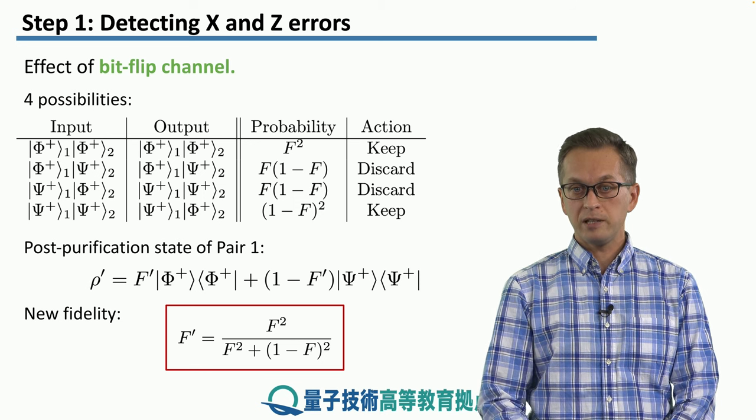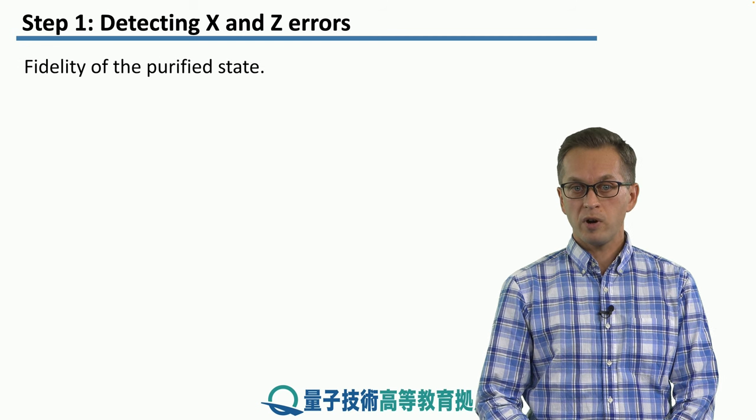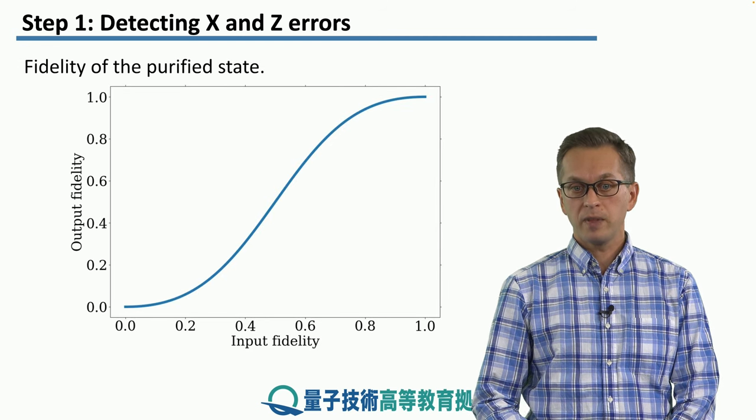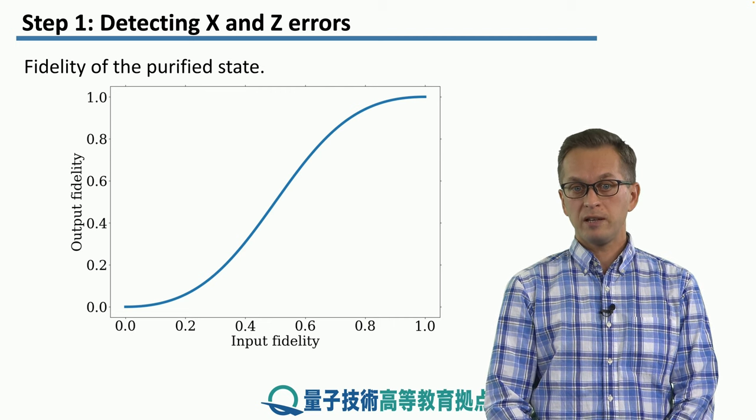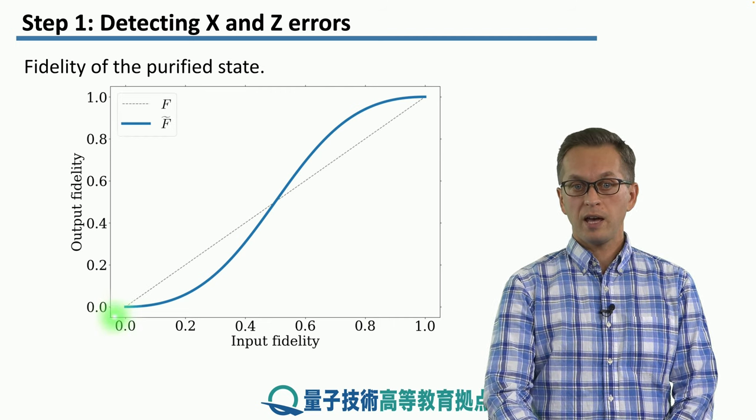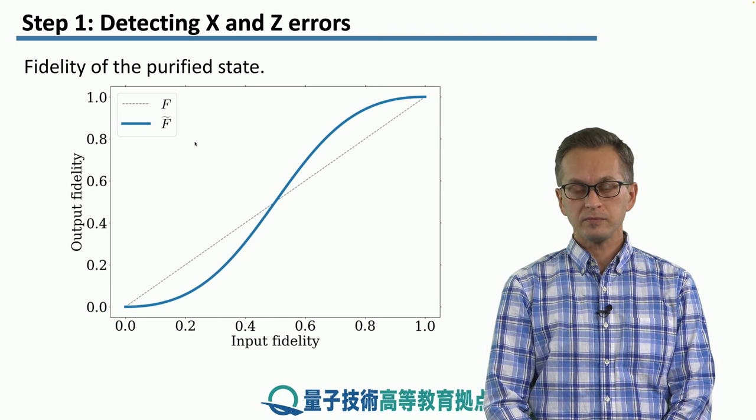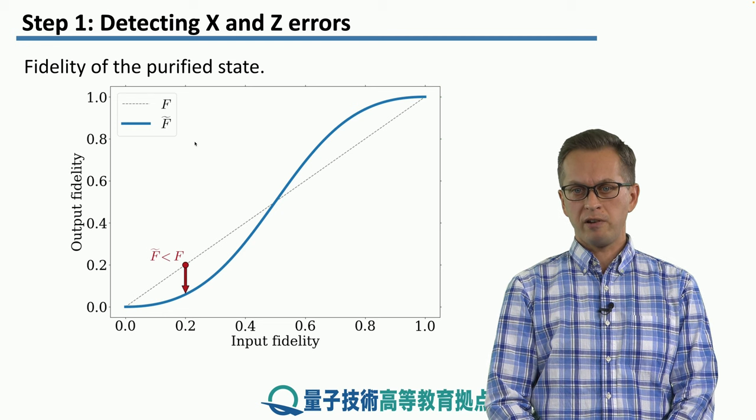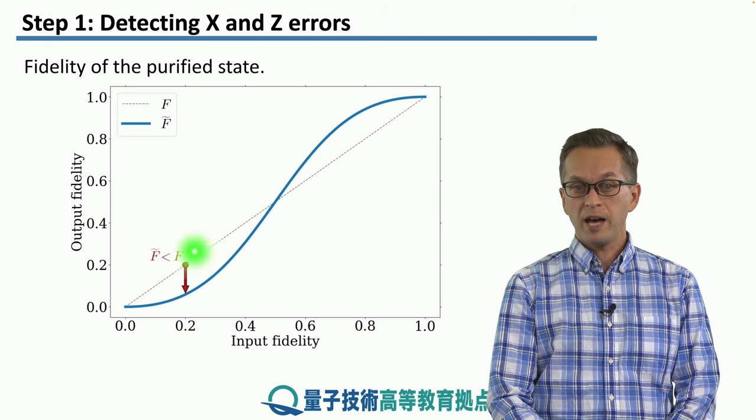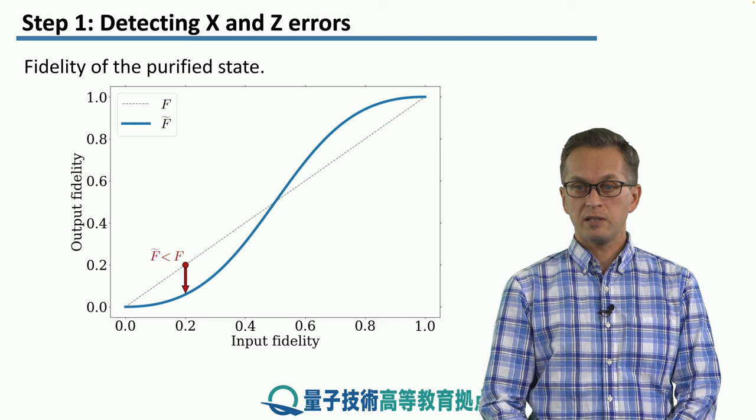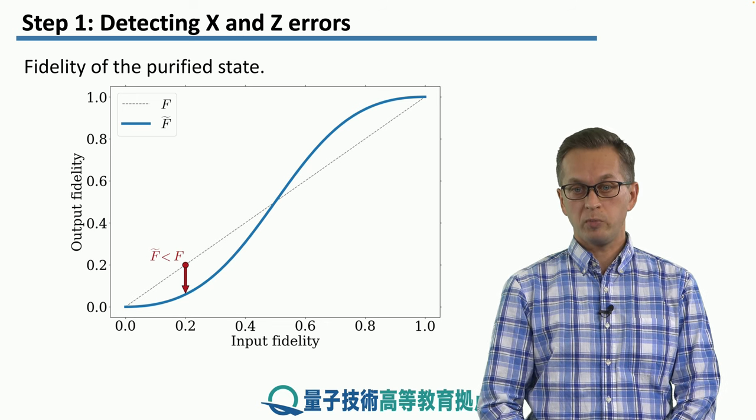So let's spend a little bit of time thinking what this means. Here, we are plotting F prime as a function of the input fidelity. And to compare it better with the input fidelity, we're also going to plot F as a straight line. So let's say that our input fidelity is very low. For example, it's 0.2. What happens? The output fidelity of the state that we're instructed to keep actually decreases. It goes below 0.2.